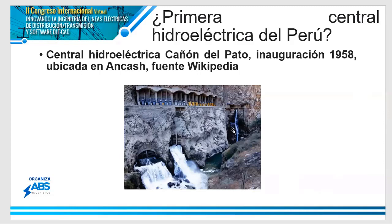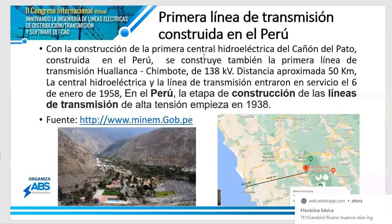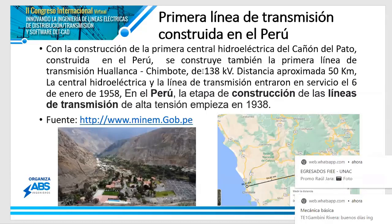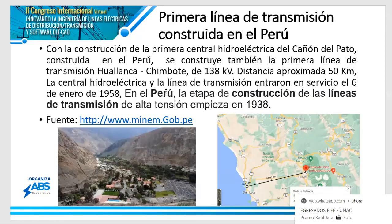Quisiera dar algunos datos históricos sobre esto. En 1958 nace mi segunda hermana, que lamentablemente ha fallecido. ¿Por qué menciono esto? Porque en ese mismo año, paralelo a ese hecho familiar, no solamente se inaugura la central hidroeléctrica del Cañón del Pato, ubicada en Anca, donde yo vivo, sino también se inaugura la línea de transmisión desde la central del Cañón del Pato hacia Chimbote.